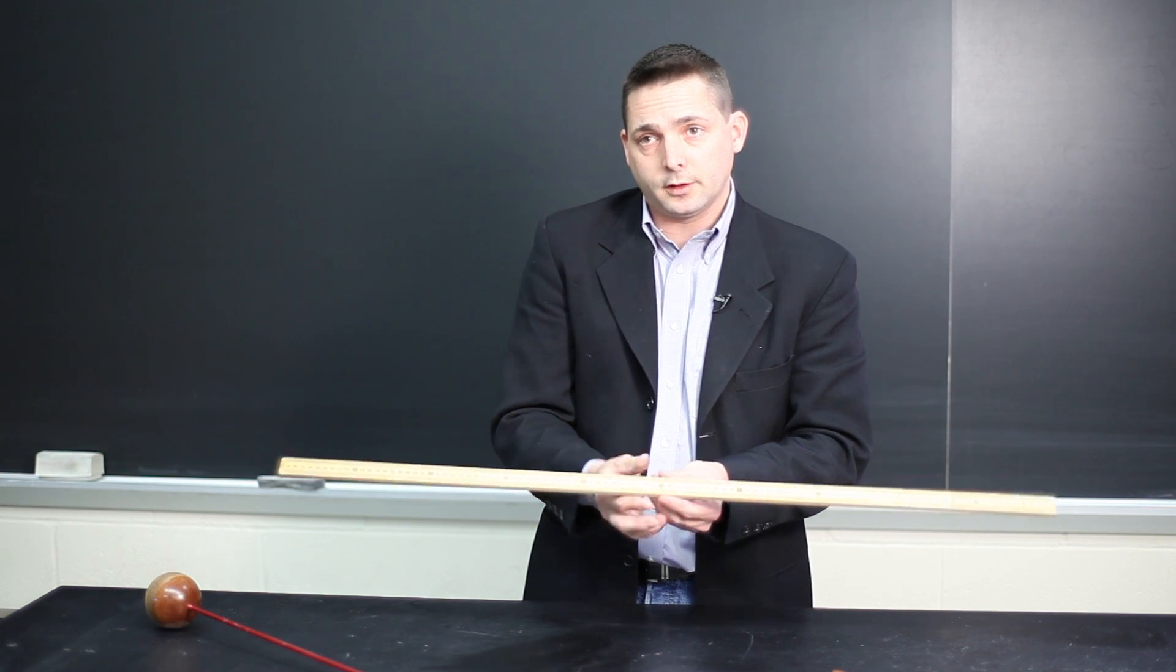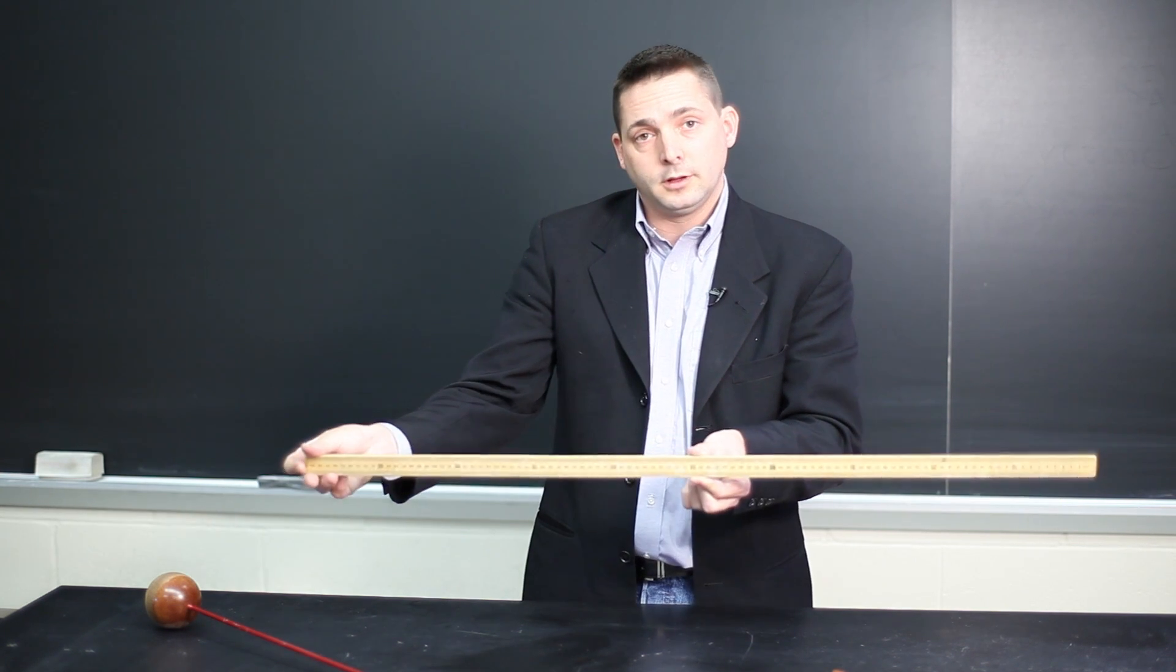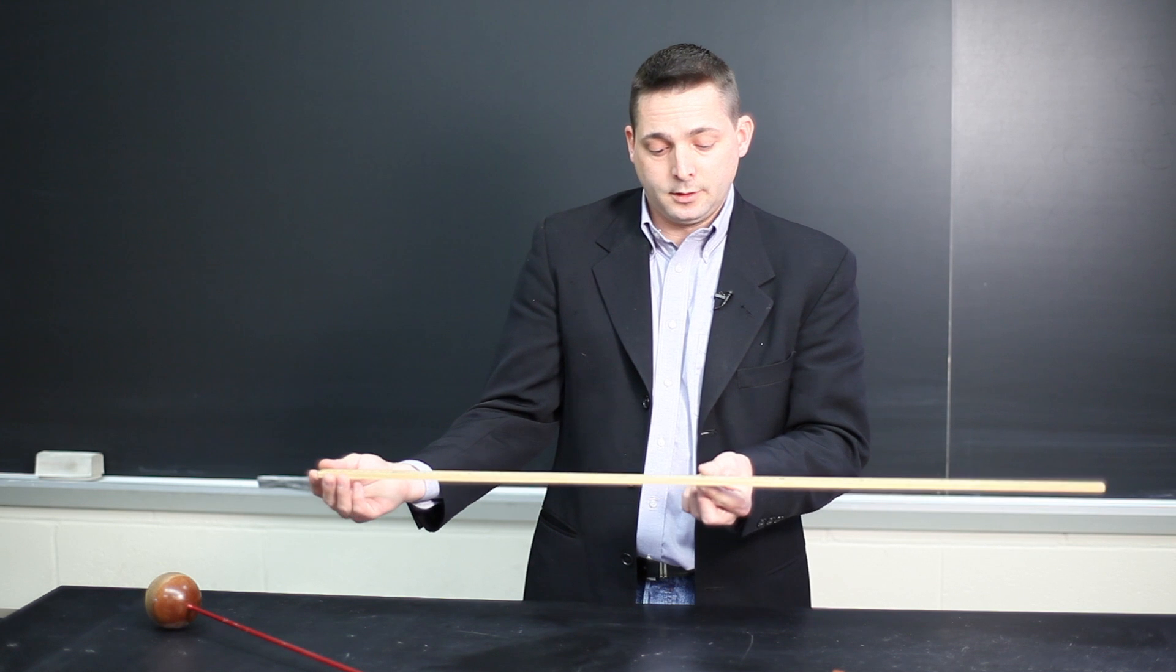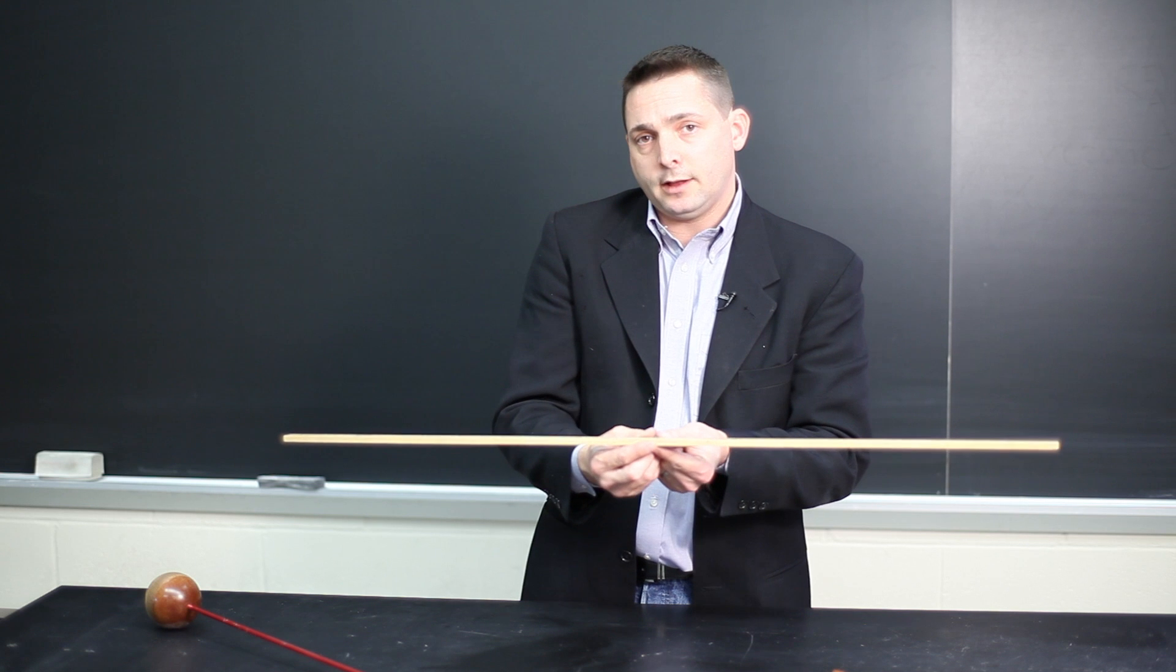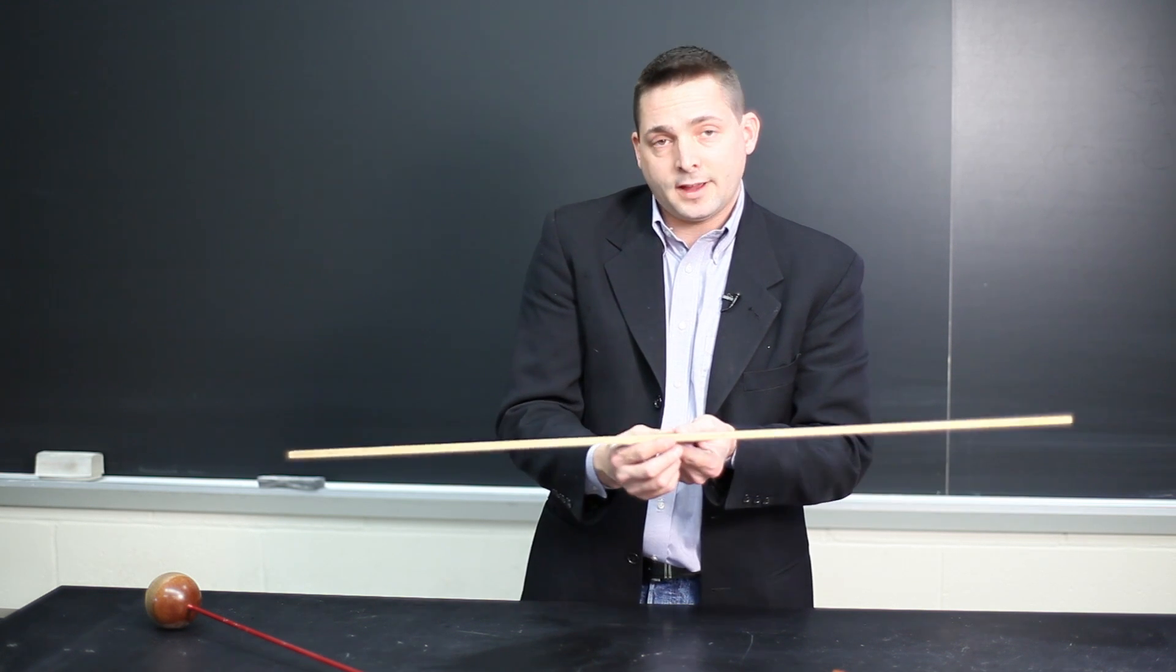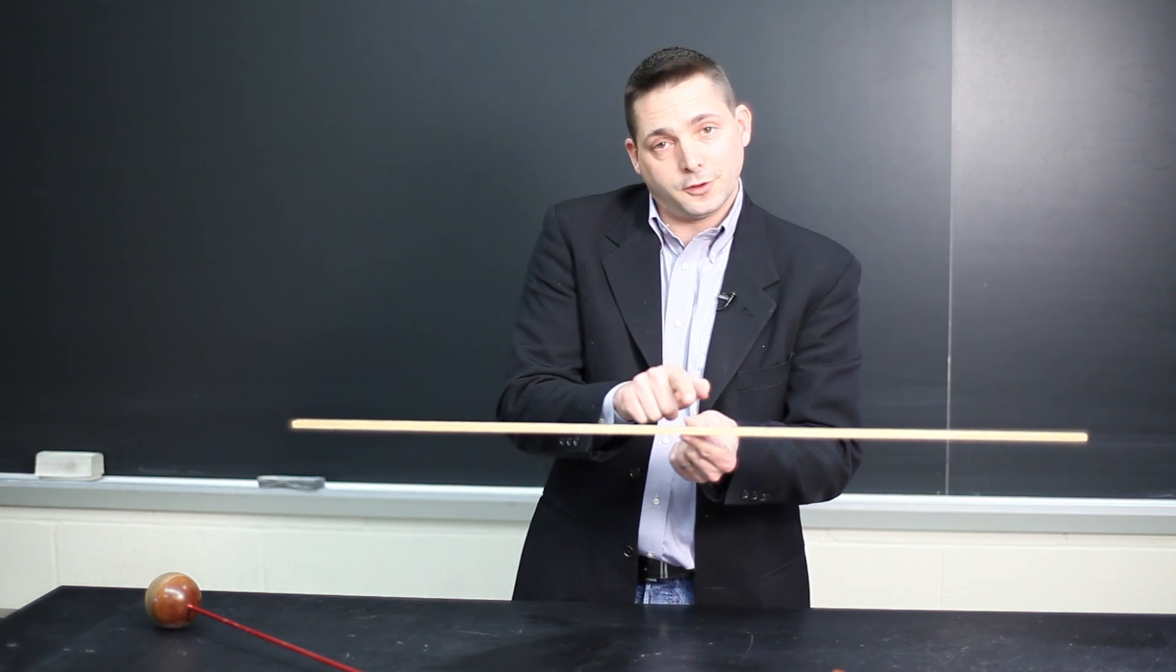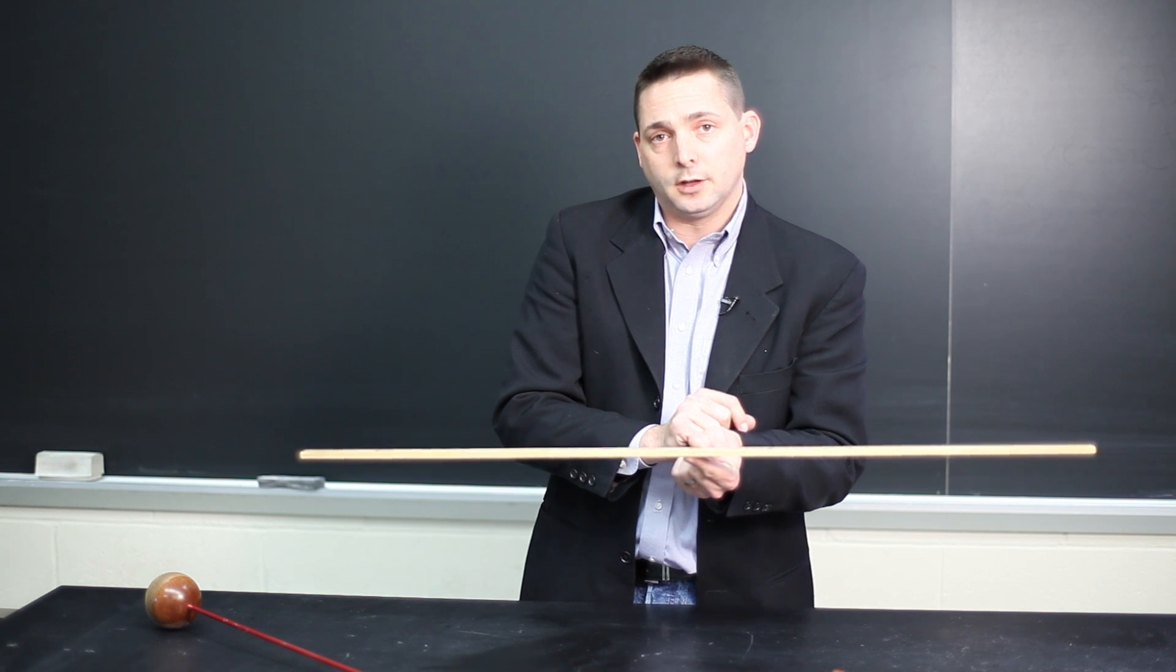For example, this meter stick, 100 centimeters long, the average mass would be located at the 50 centimeter mark. In order to balance an object, what needs to happen is the center of gravity, or the center of mass, must be at the lowest position.